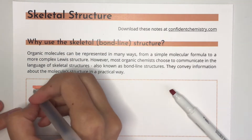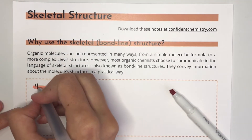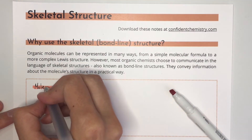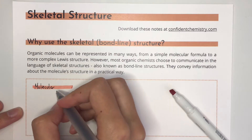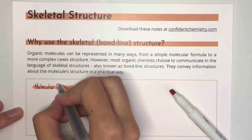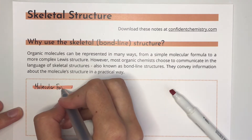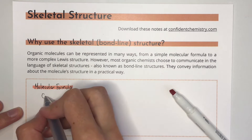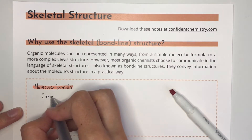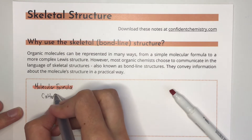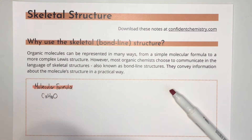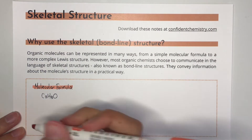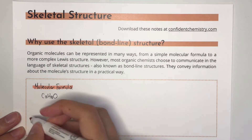Let's look at the molecule 2-propanol and compare some of the different ways it can be represented. The molecular formula is easy to write, but all it tells us is how many of each atom is present. C3H8O can represent 2-propanol, but it could also represent any other isomer that fits this formula — it doesn't give us enough information.